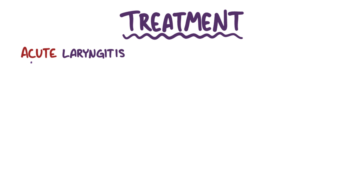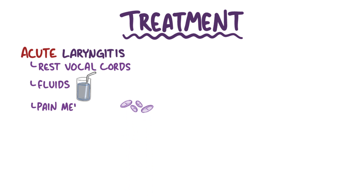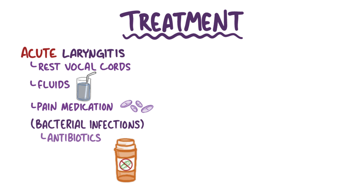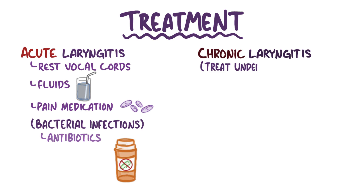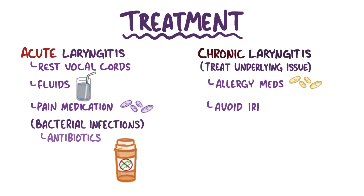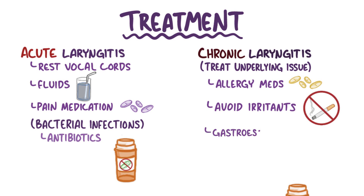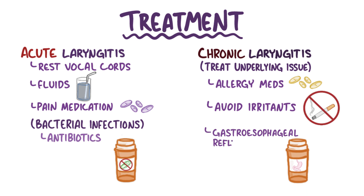Generally speaking, for acute laryngitis the treatment is resting the vocal cords, as well as getting fluids and pain medications. For bacterial infections, antibiotics can be helpful. For chronic laryngitis, it's important to treat the underlying issue — for example, using allergy medication, avoiding irritating agents, and using gastroesophageal reflux medications.